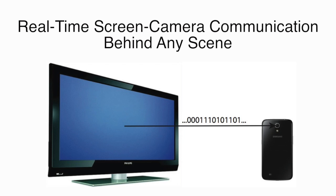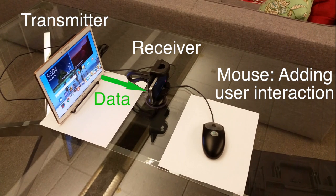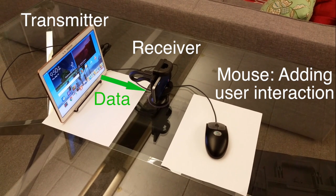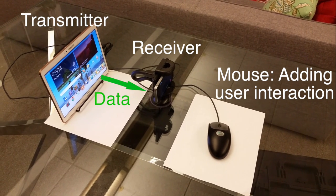This is HiLite, the first system that allows screens to talk to camera-equipped devices without you knowing it, regardless of the content shown on the screen.